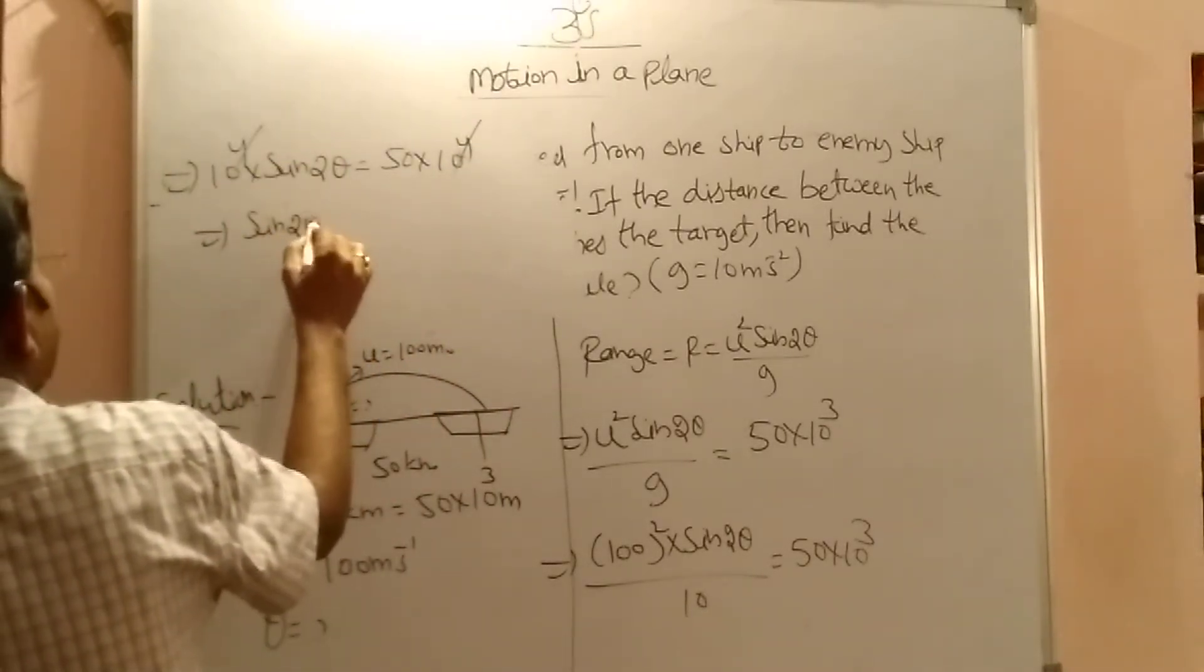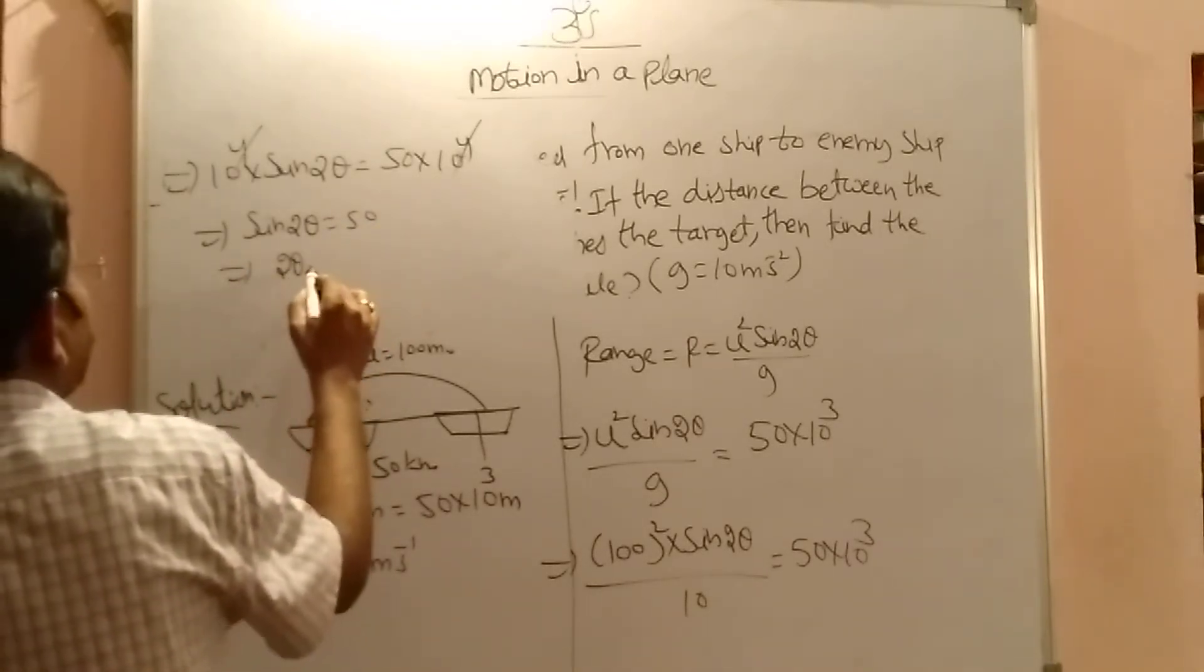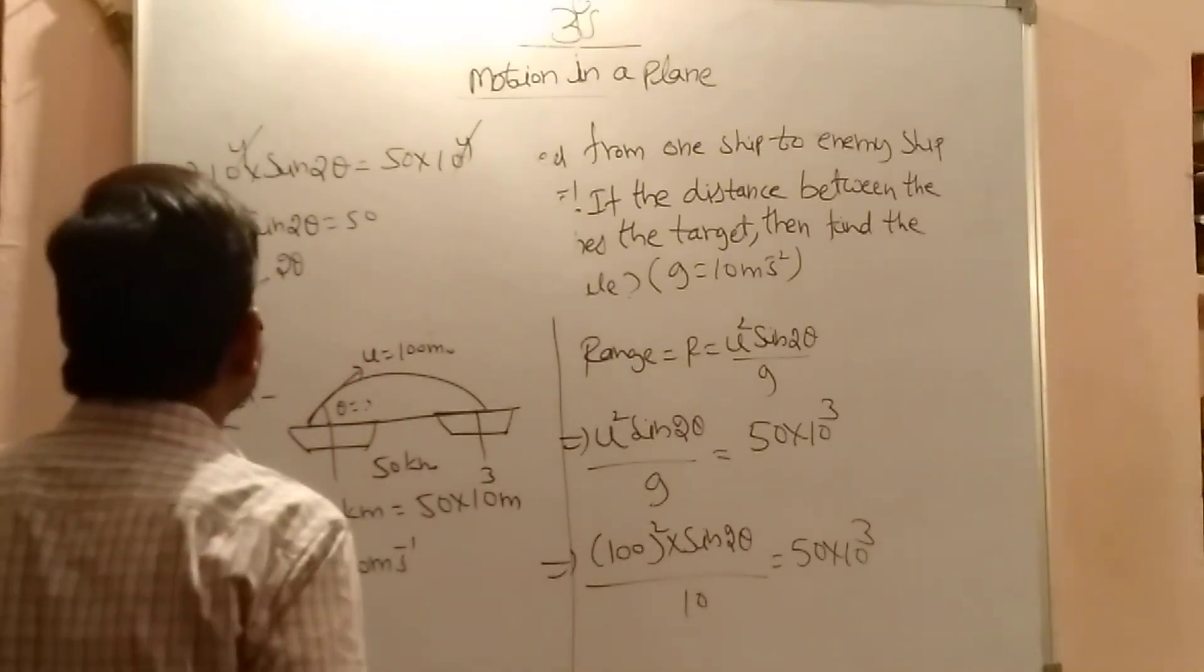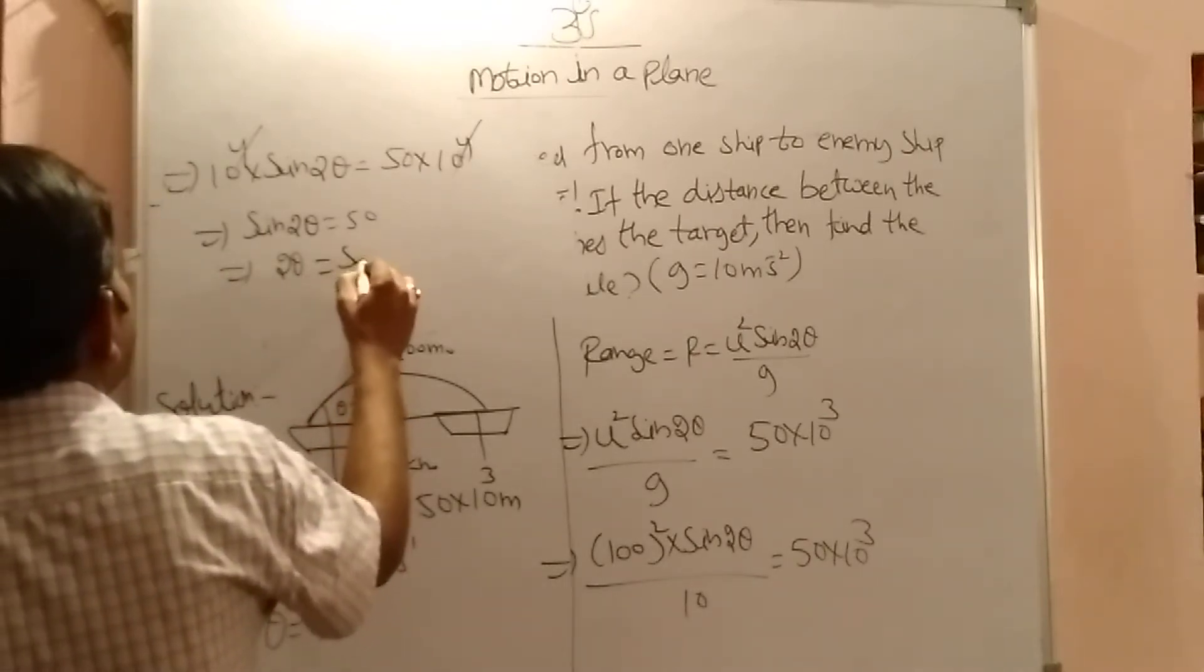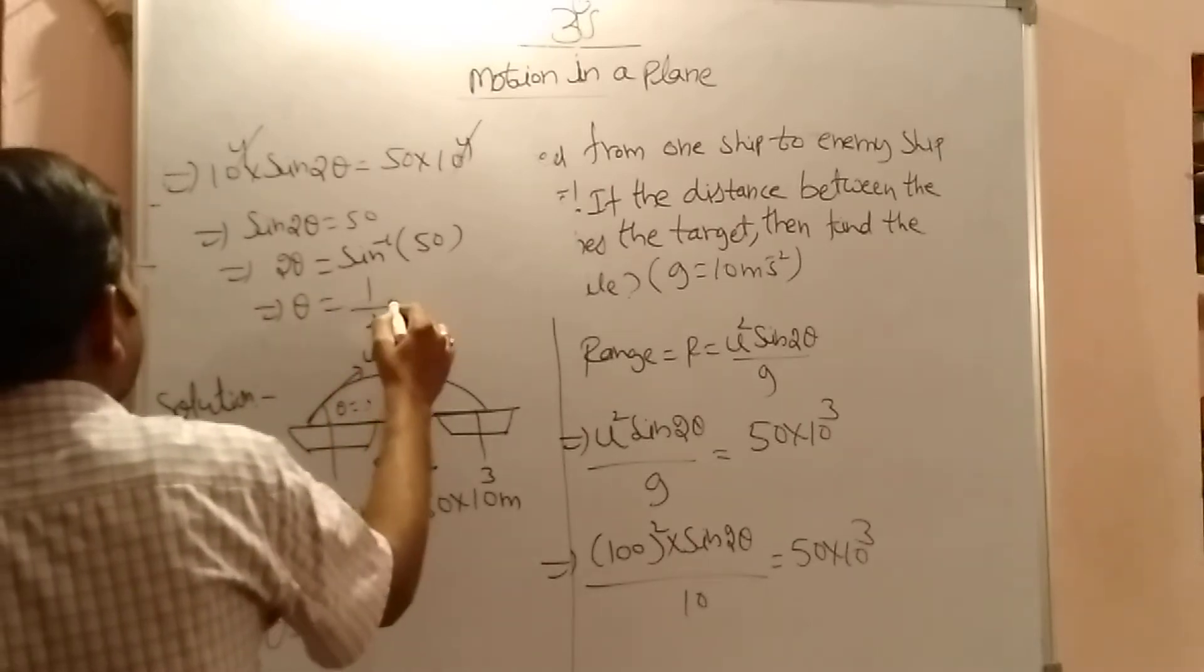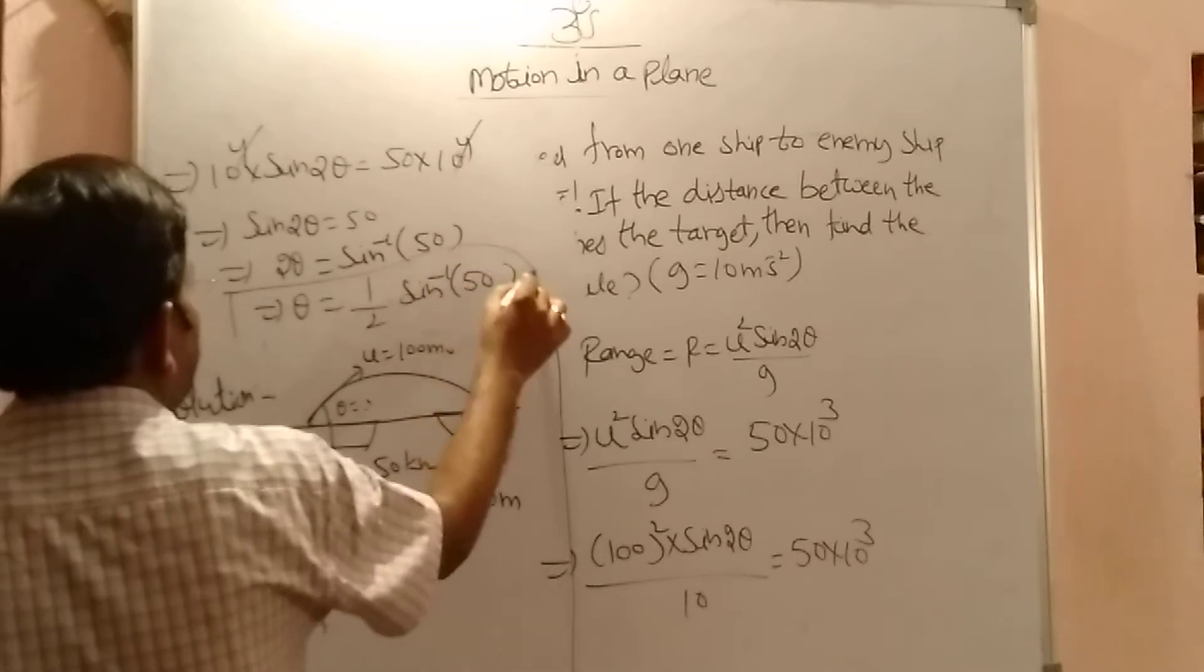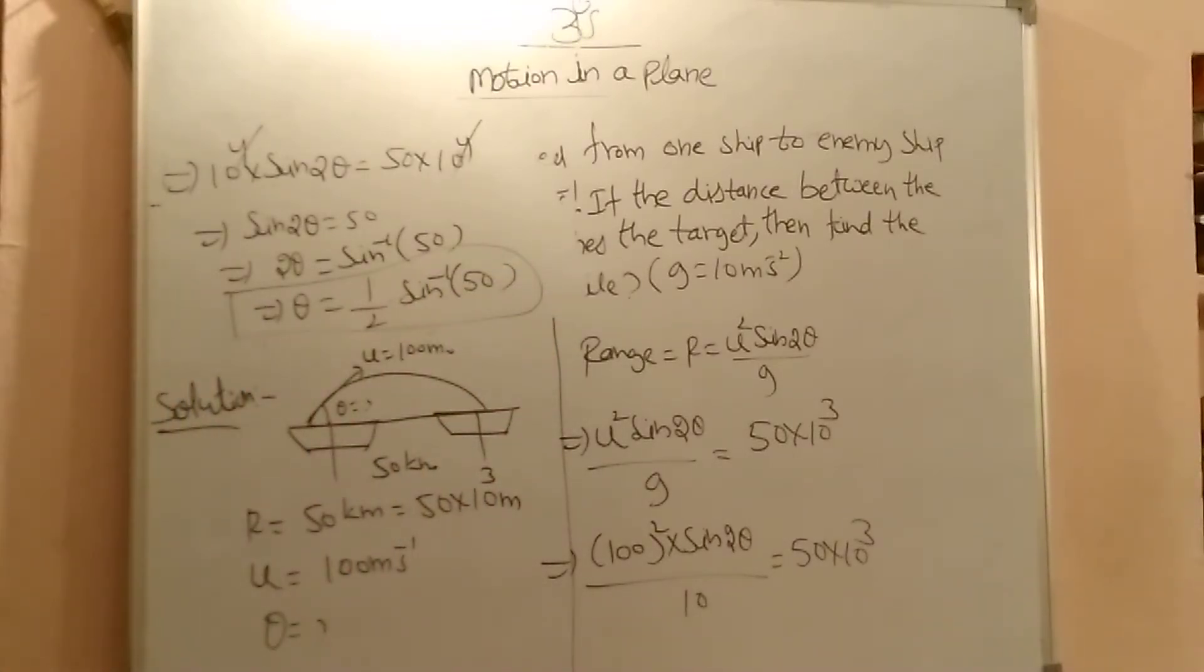Now sin 2 theta equal to 50. So 2 theta equal to sin inverse 50. What about theta? 1 by 2 into sin inverse 50. So this is the angle of projection. That is the angle of projection of the missile.